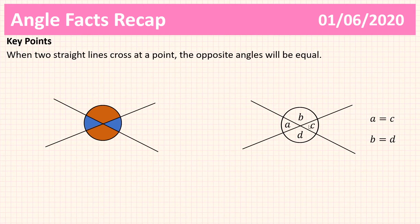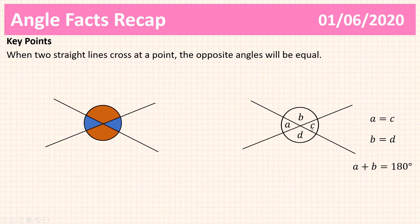Let's have a look at what else we can say. We can say that a plus b is equal to 180 degrees because a and b are around a point on a straight line. We could also say that c and d sum to 180 degrees, a and d sum to 180 degrees, and b and c sum to 180 degrees. We can also say that a, b, c, and d sum to 360 degrees because they are around a point.